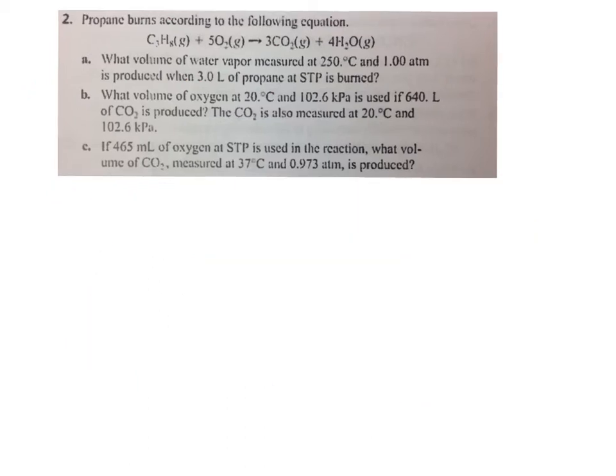Okay. So part B says what volume of oxygen at 20 degrees Celsius and 102.6 kilopascals is used if 640 liters of CO2 is produced, and the CO2 is also measured at the same temperature and pressure. The key term there is same temperature and same pressure. So then we know that the only thing that's varying is the number of liters.